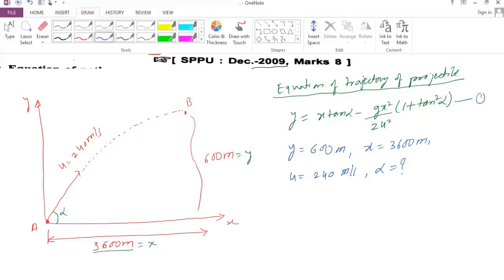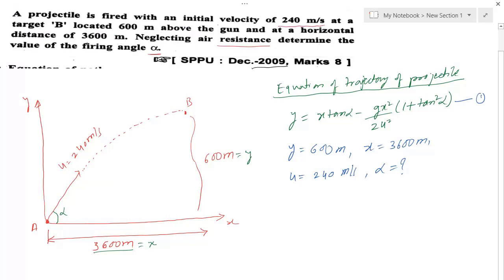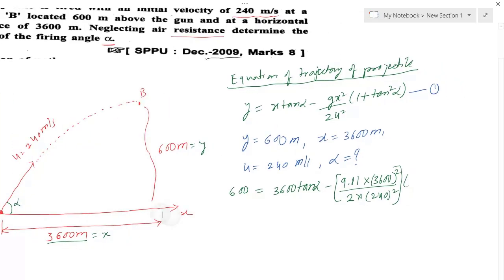Let us substitute the values. We get 600 equals 3600 tan alpha minus 9.81 times 3600 squared upon 2 times 240 squared, with the whole bracket multiplied by 1 plus tan squared alpha.